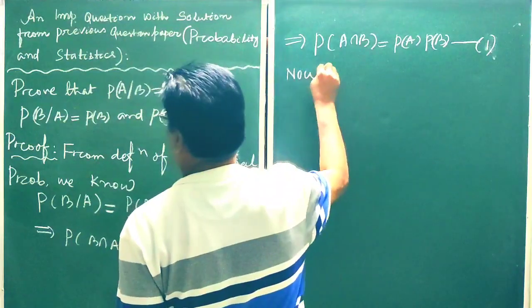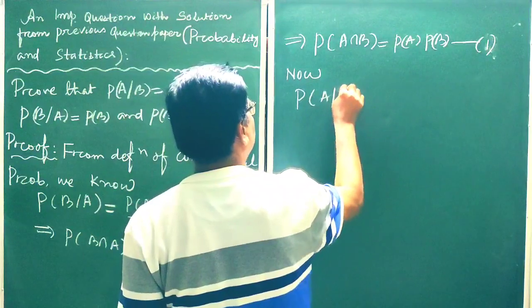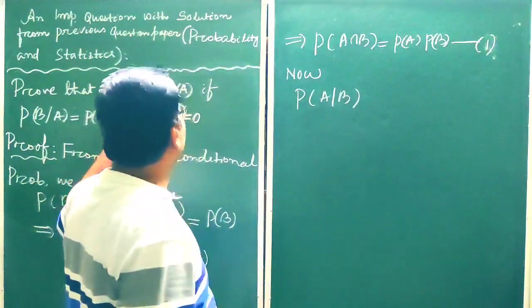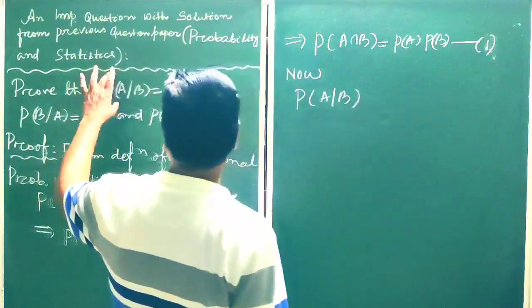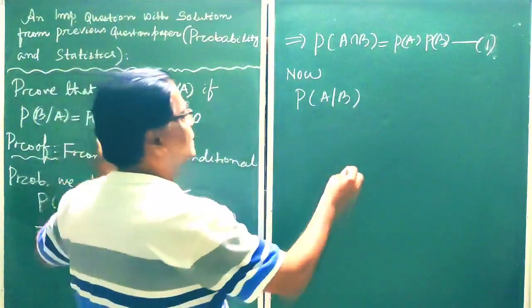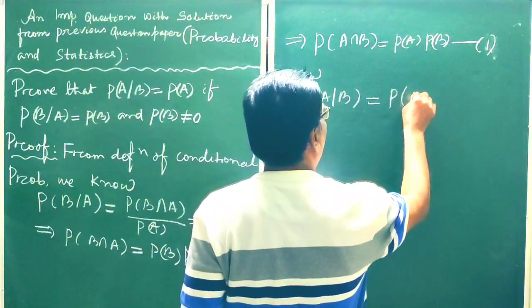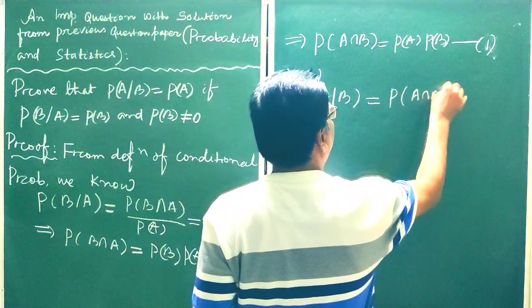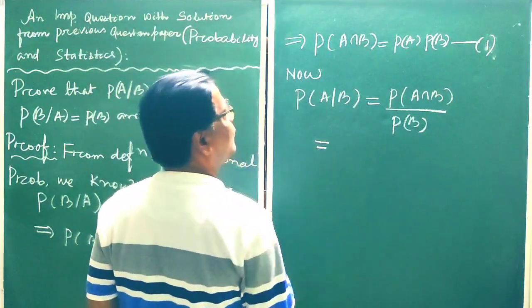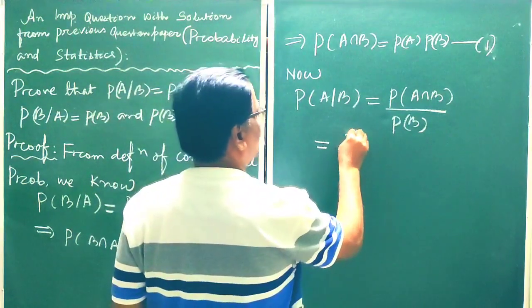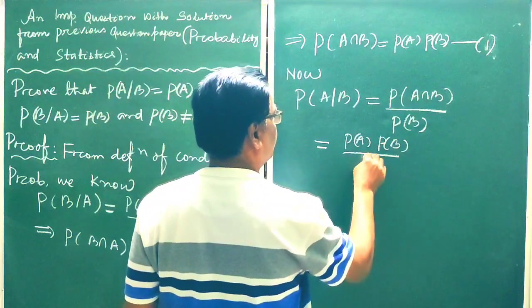Now, P of A given B means the conditional probability of A when B has occurred. This is equal to probability of A intersection B divided by probability of B, which equals probability of A into probability of B divided by probability of B.